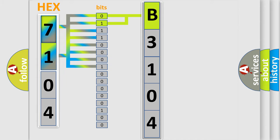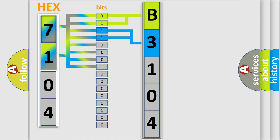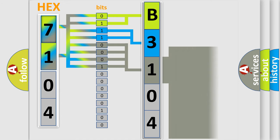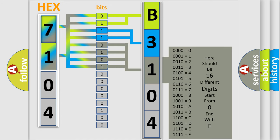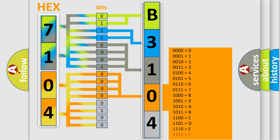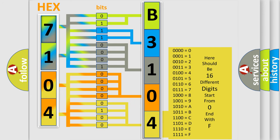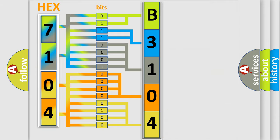The next two bits determine the second character. The last bits of the first byte define the third character of the code. The second byte is composed of a combination of eight bits. The first four bits determine the fourth character of the code, and the combination of the last four bits defines the fifth character. A single byte conceals 256 possible combinations.